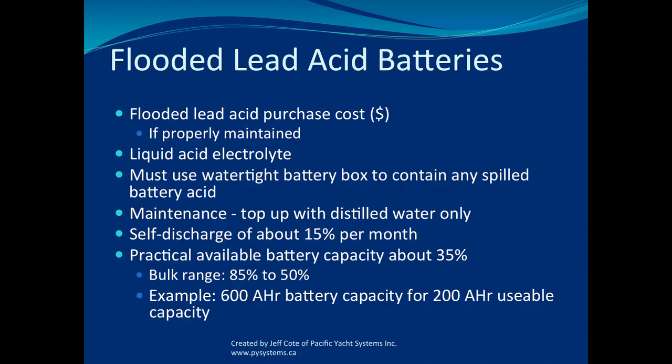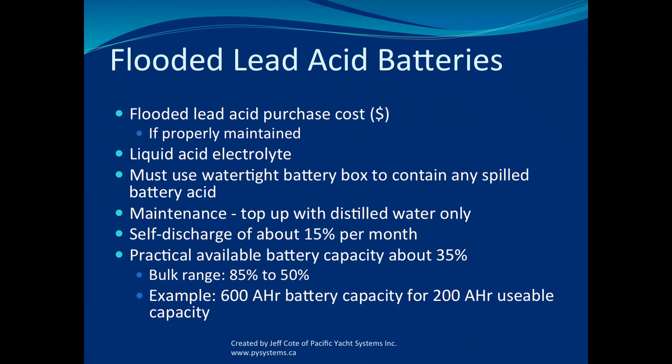This is huge: a flooded lead acid battery has only about a third of its battery capacity that is usable. People say my battery banks are ridiculous, but it's just math. If you have a 600 amp hour battery bank, when you're out cruising you're only going to be using a third of that — meaning you need three times the battery bank compared to what you'd need with other chemistries. That's the ratio: with flooded lead acid, you need to buy three times what you actually want to use.